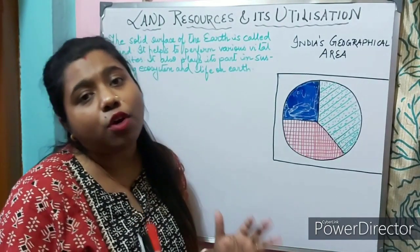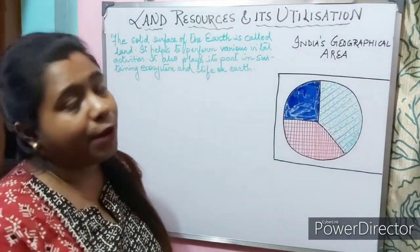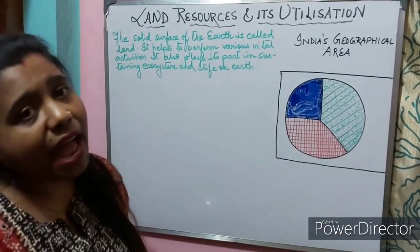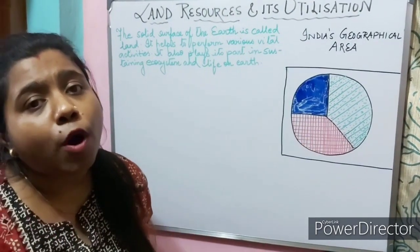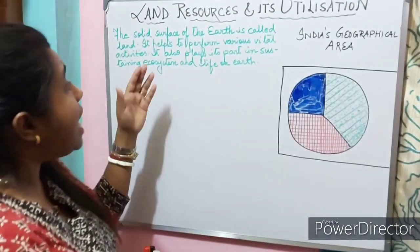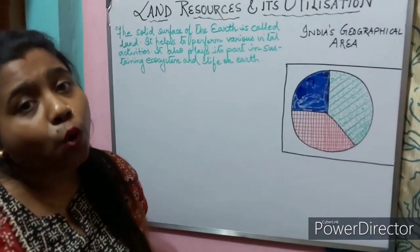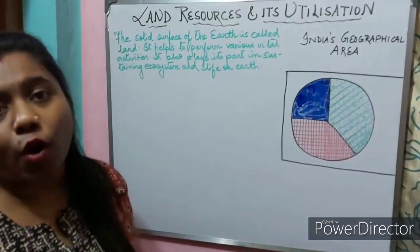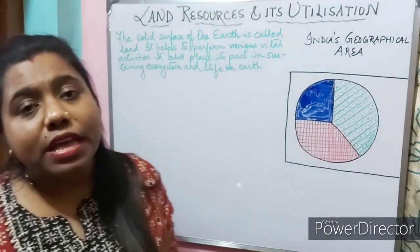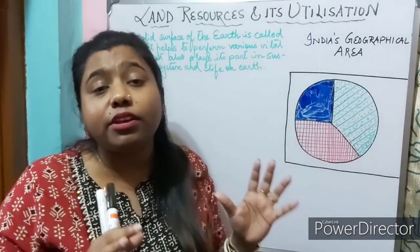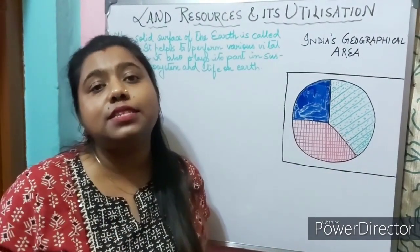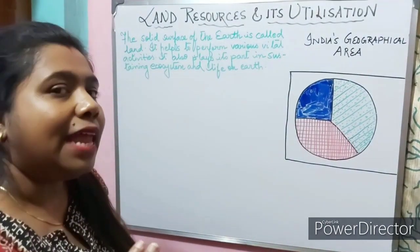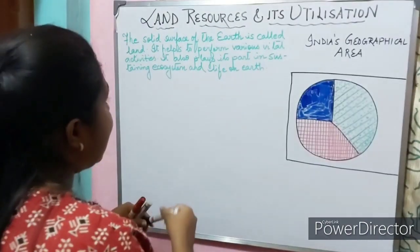What do you mean by land? The solid surface of the earth is called land. Land helps us to perform vital activities. It also plays its role in sustaining the ecosystem and life on earth. As we all know, only 30 percent of our earth's surface is covered with land, so we can say that our land is limited.